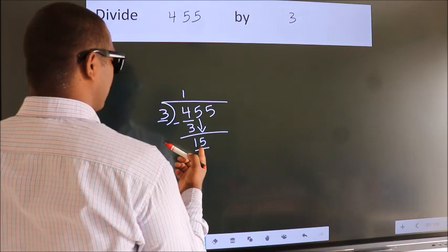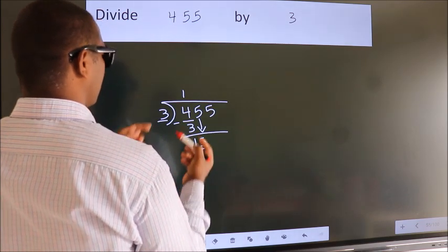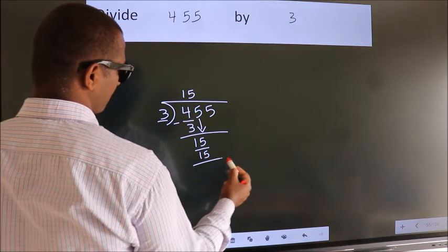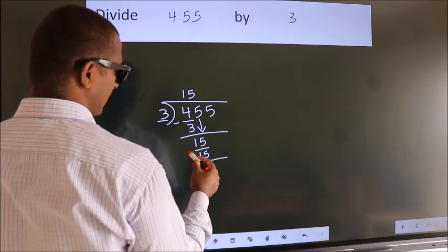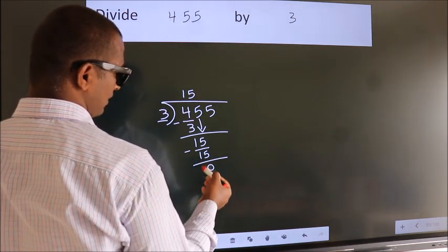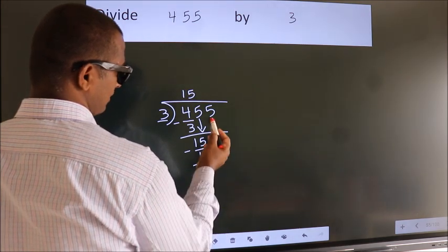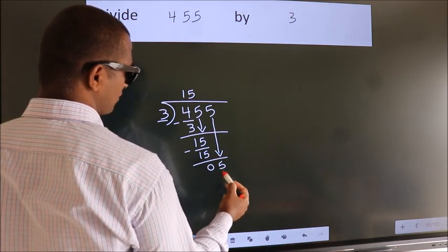When do we get 15? In the 3 table. 3 fives, 15. Now we subtract. We get 0. After this, bring down the beside number. So, 5 down. So, 5.